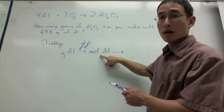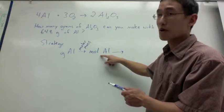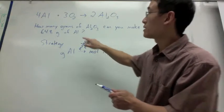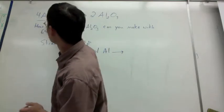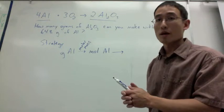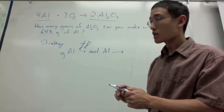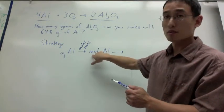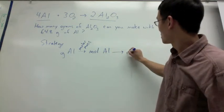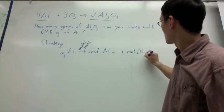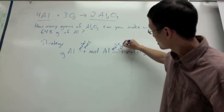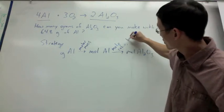Once I have moles of aluminum, I now can remember that moles of aluminum and moles of aluminum oxide, these two things right here, they are related by the mole ratio from the balanced chemical equation. So I can convert moles of aluminum to moles of aluminum oxide using the mole ratio in the balanced equation.